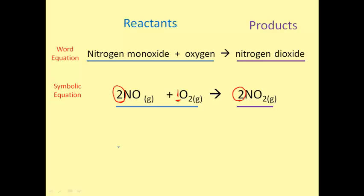Note that the 1 in front of the O2 is not written and is simply understood. Remember that this arrow means 'produces.' Another way to think of this reaction is to say that nitrogen monoxide reacts with oxygen to produce nitrogen dioxide.